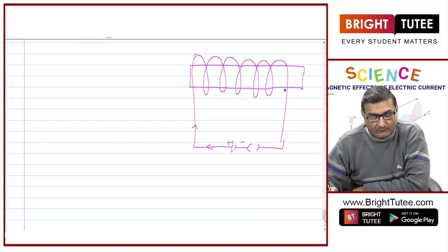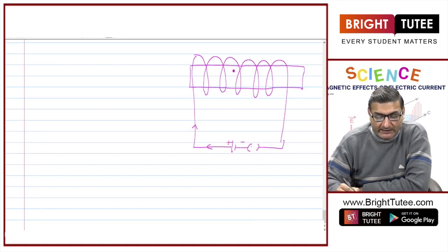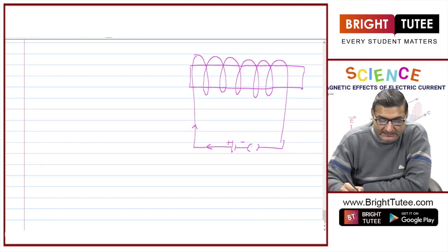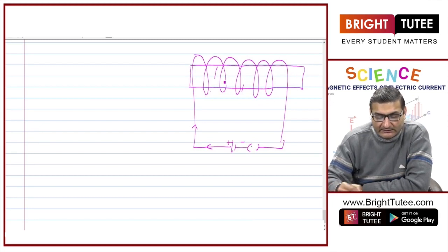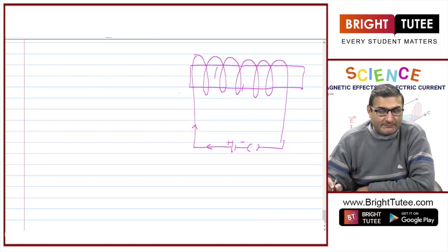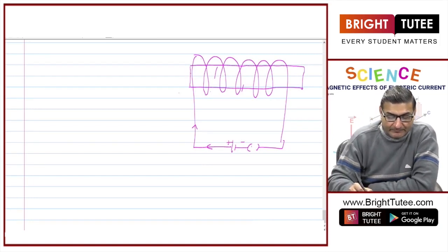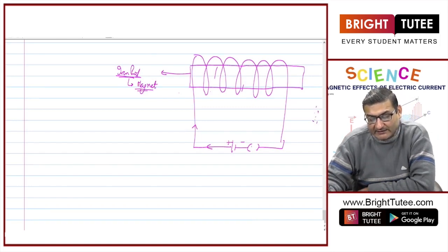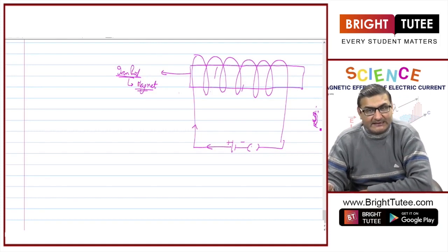There are two ways of saying this. One is: in this solenoid, I just inserted an iron rod. Or I can also say that I have taken an iron rod and then wound these coil turns on this particular iron rod and connected to a cell. Now, when I switch on the current, this iron rod will become a magnet and will attract some pieces of iron nails.